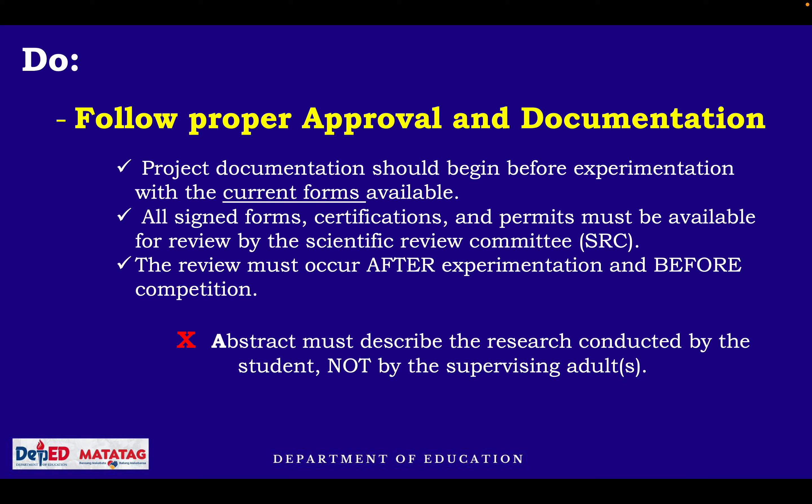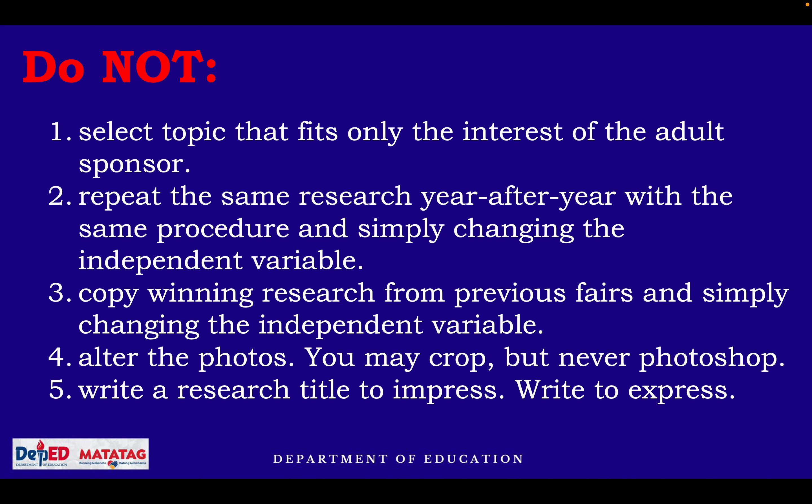There are forms that you will fill out. The abstract must describe the research conducted by the student, not the supervising adult. All processes involved in the science investigatory project must be done by the student, not the teacher. Do not select a topic that fits only the interest of the adult sponsor — that is why you are grouped according to your interest, because you will be the one to decide your research problem and topic. Do not repeat the same research year after year with the same procedure, simply changing the independent variable.